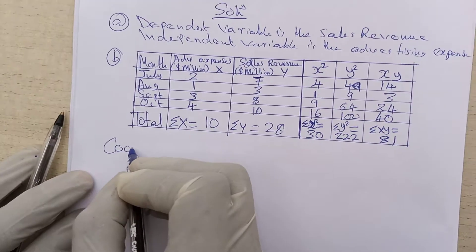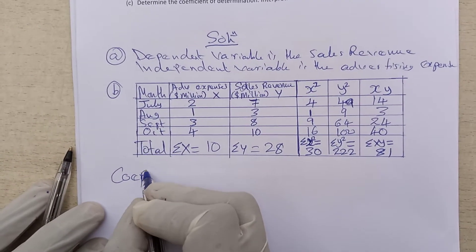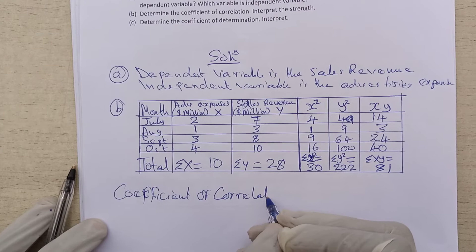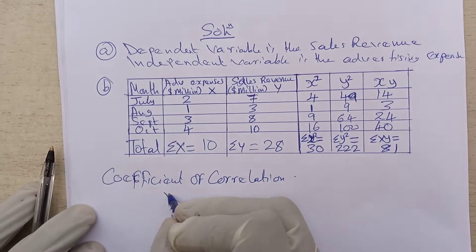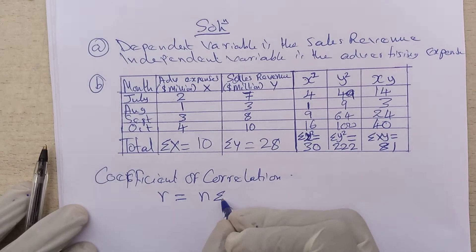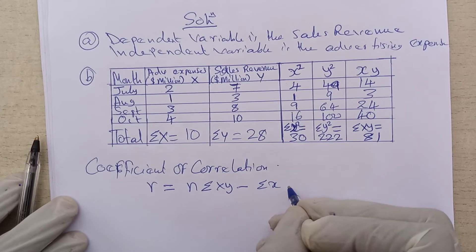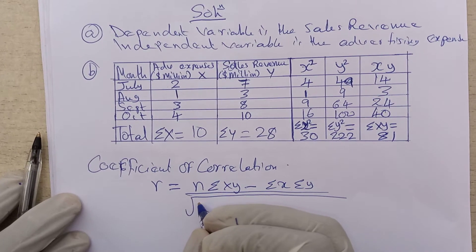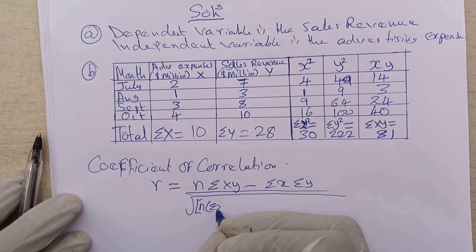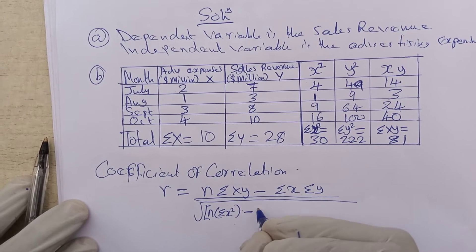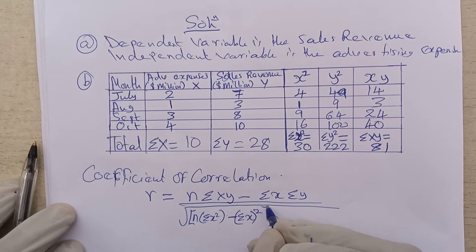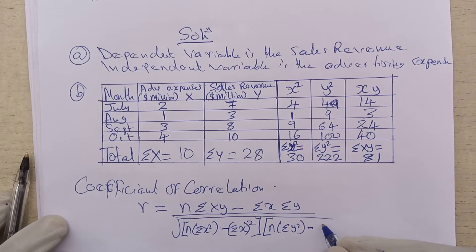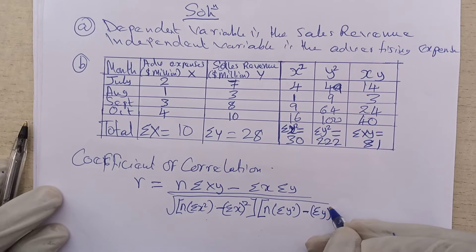To find the coefficient of correlation R, the formula is: R equals N multiplied by sigma XY, minus sigma X multiplied by sigma Y, all divided by the square root of the quantity (N times sigma X squared minus sigma X all squared) multiplied by (N times sigma Y squared minus sigma Y all squared).